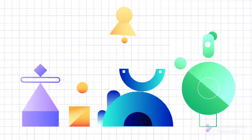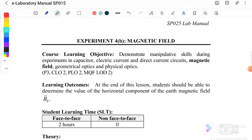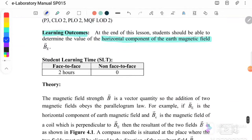Hello, welcome back to my channel. Today we are going to learn how to write an experiment report for Experiment 4B: Magnetic Field. The learning outcome is that at the end of this lesson, students should be able to determine the value of the horizontal component of Earth's magnetic field B_E. The theoretical value for the Earth's magnetic field is B_E = 0.42 × 10⁻⁴ Tesla, which is the standard value for the horizontal component.